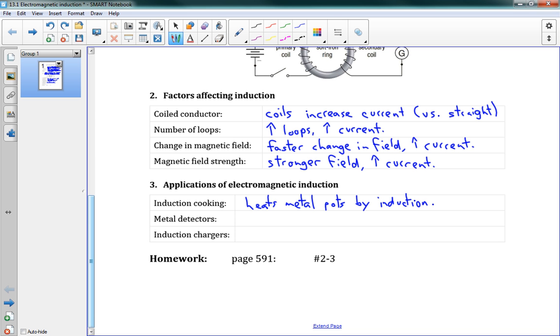Another one, metal detectors. If you're on the beach searching for metal, or if you go through the airport, well, what they do is these detect induced currents. So, they have a strong magnetic field, and they detect if any current was induced inside of that field. And if there was, then there must be some metal.